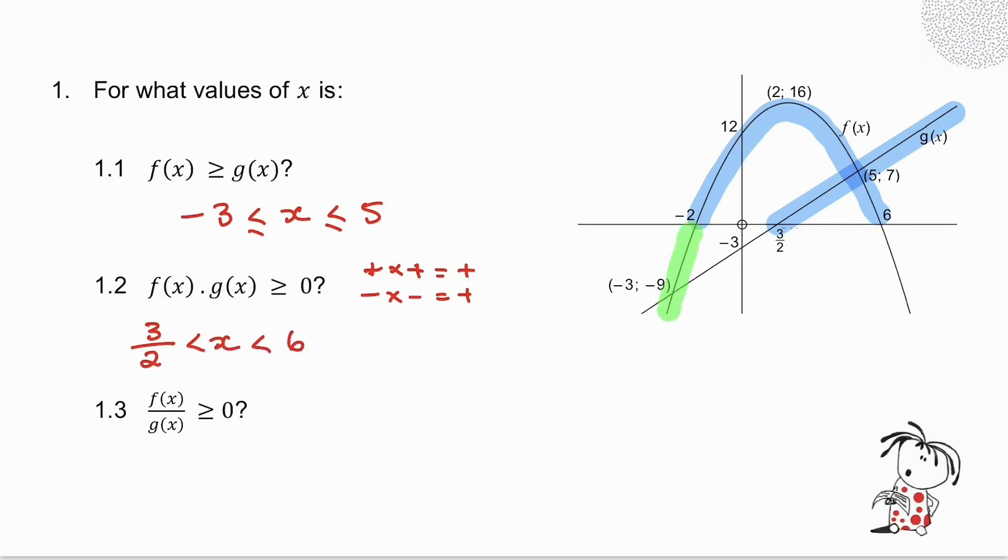Where are they both negative? Well, my parabola is negative in those two areas, and my straight line is negative there. So where are they both negative? They're both negative from minus 2 going to the left. In other words, I could also have x is less than minus 2. Now, we need to look at the endpoints. At 3 over 2, g(x) is 0. That's fine. I can include that because I want where is greater than or equal to 0. At 6, f(x) is 0. That's fine. At minus 2, f(x) is 0. That's fine. So I can include all of these endpoints.